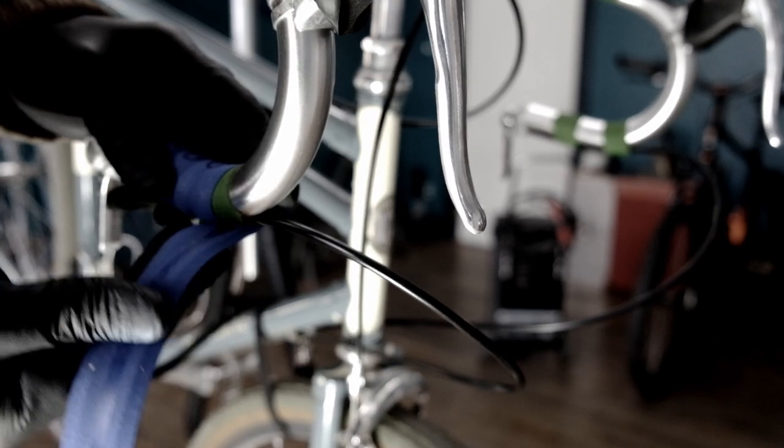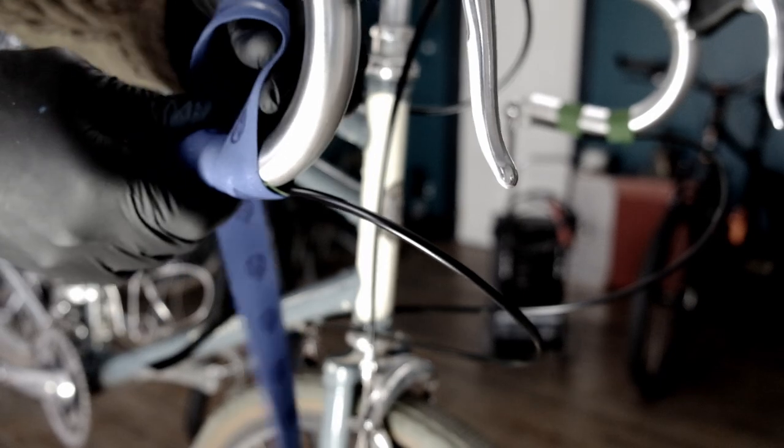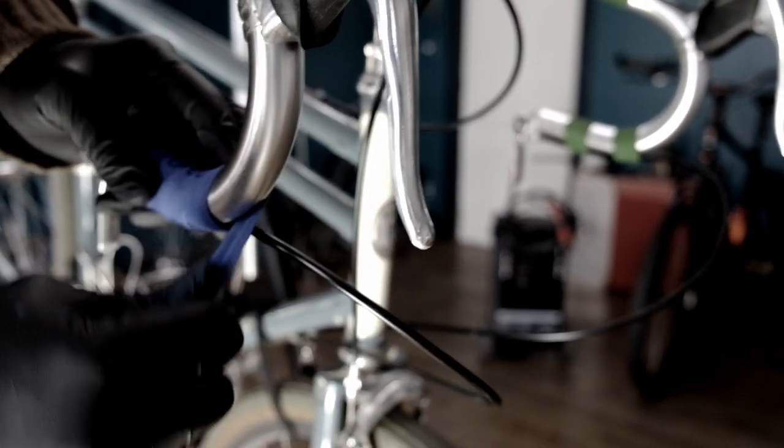One more thing about bar end levers, you're gonna want to get that cable out of the handlebar wrap about just before the bend, so wrap up to the tape over the cable and then just go under the cable. There's no better way to do that.